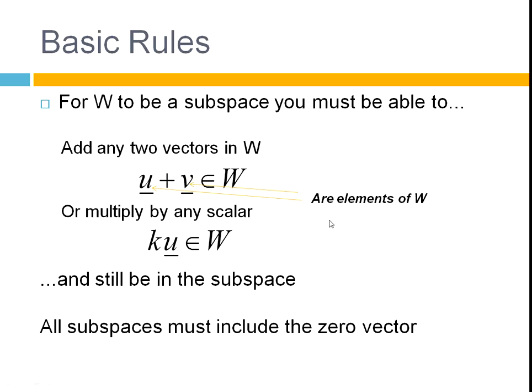And you might as well remember that all subspaces must include the zero vector. So, a quick way to identify if something is not a subspace is to look at it and say, does it include the zero vector? And if it doesn't have the zero vector, it cannot be a subspace.